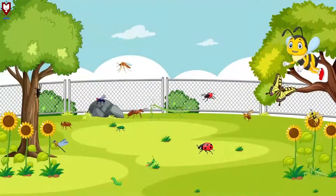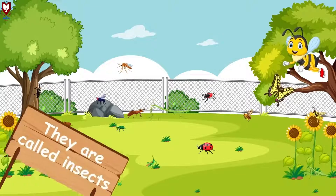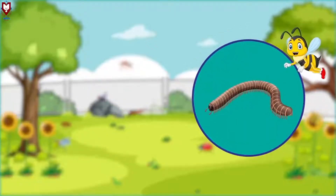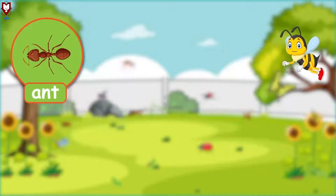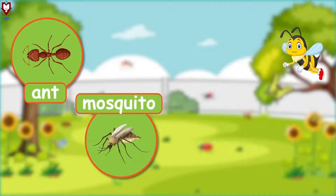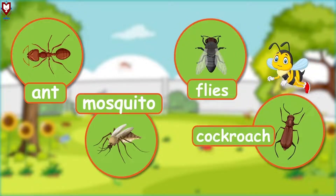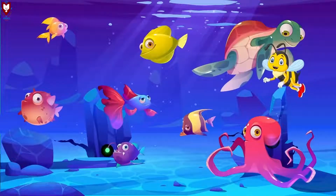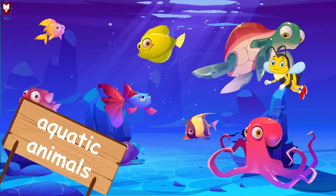Other than birds and animals, we also see various small animals around us — they are called insects. Insects have many pairs of legs, and some insects also have wings to fly. Ants, mosquitoes, flies, and cockroaches are some insects.